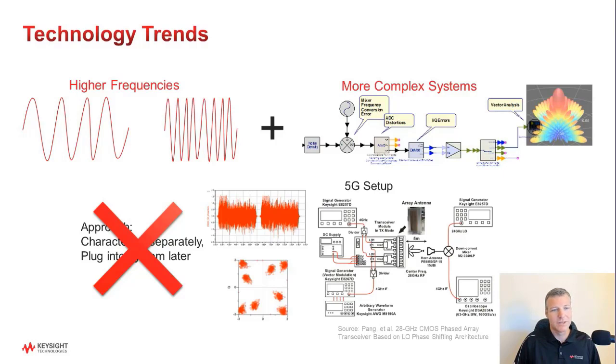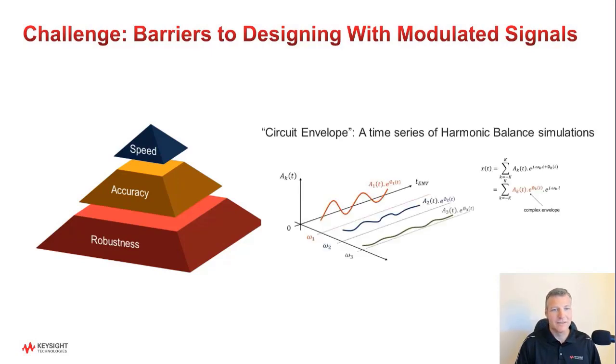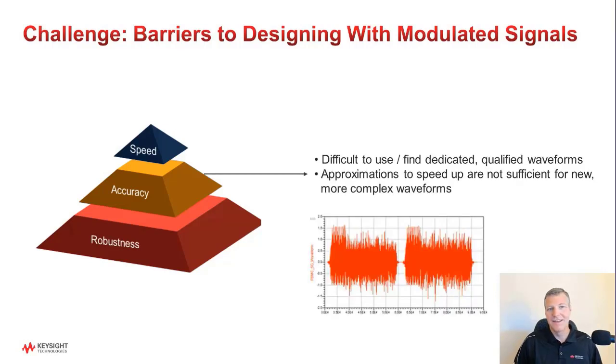Because the measurement gets more complex as well. So, we're moving from a paradigm where you have these static compression or IP3 characteristics, and they're used for the design. Now, we're moving to one where it becomes necessary to consider the actual modulated signals themselves early on in the circuit design process. And that gets really challenging. There are a number of barriers to do this which are really related to speed, accuracy, and robustness. So, let's start with speed. Circuit envelope is a technique that can be used to simulate a modulated signal. It's effectively a time series of harmonic balance simulations, which makes it much faster than other types of analysis, like transient. So, even so, when you look at how complex modern waveforms and circuits are becoming, envelope simulation still takes too long to be useful in the design process. It's faster, but it turns out it's not really fast enough.